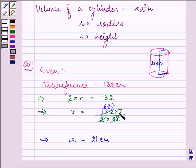21 cm, that is 3 times 7. So we know the value of r, we know the value of h, which is given to us as 25 cm.